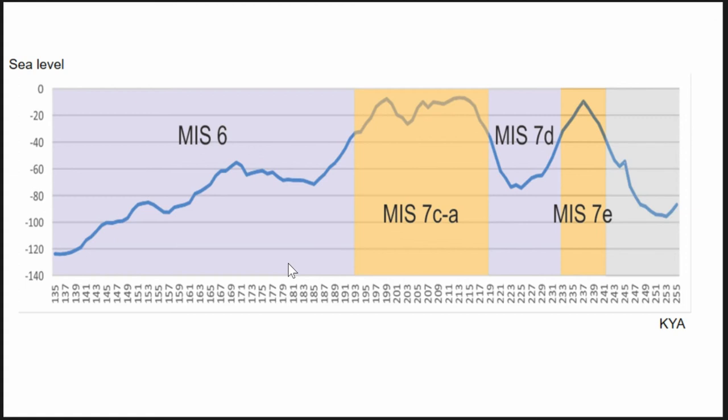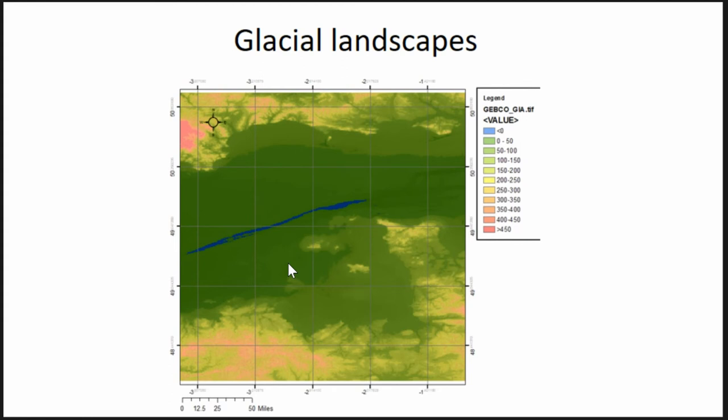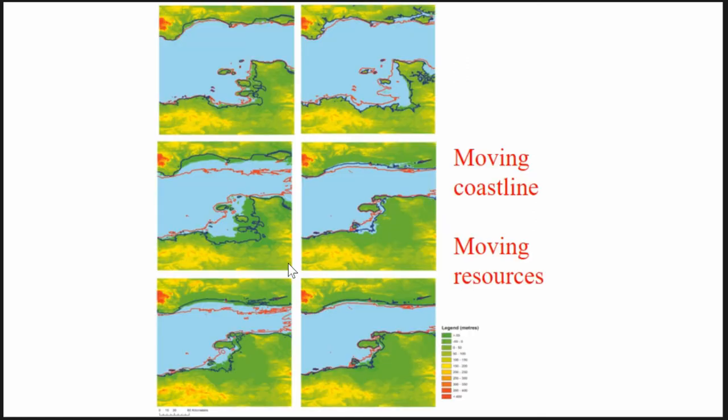Based on proxies for climate — which also give us a proxy for sea levels — this represents the GEBCO dataset with a glacial isostatic adjustment applied to it. This isn't applicable to the time period I'm discussing, but it's worth noting that applying glacial modelling shows a completely different landscape model. This is more applicable to somewhere around the Last Glacial Maximum, around 20,000 years ago.